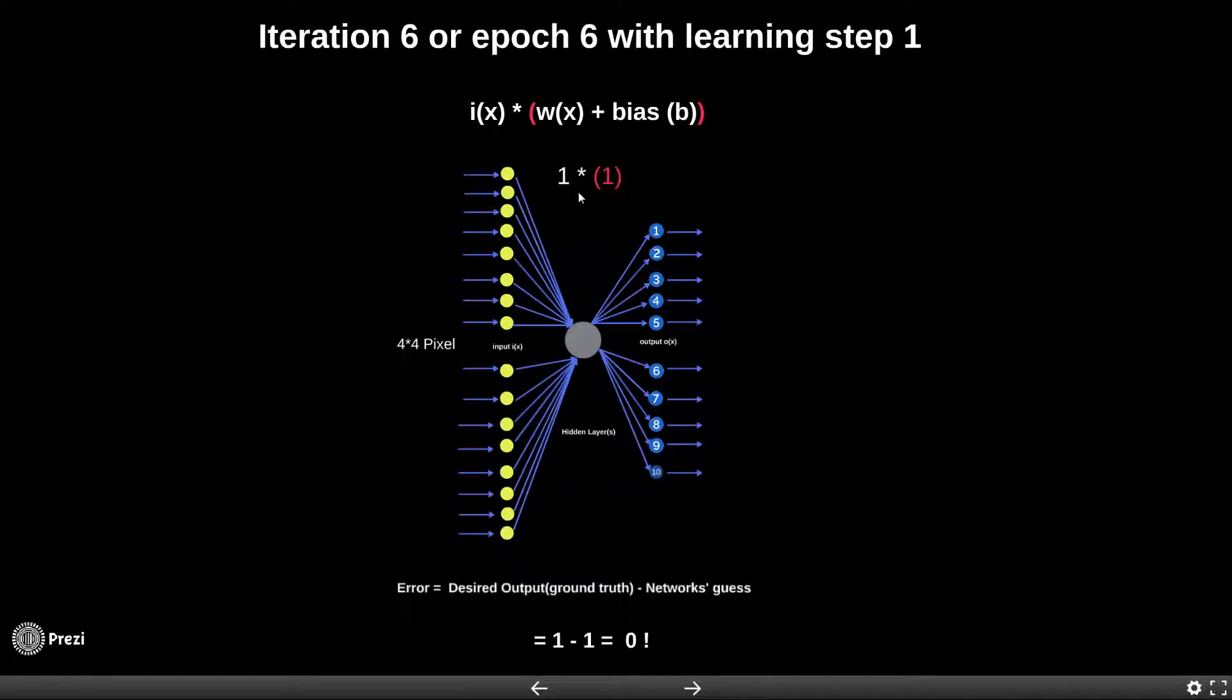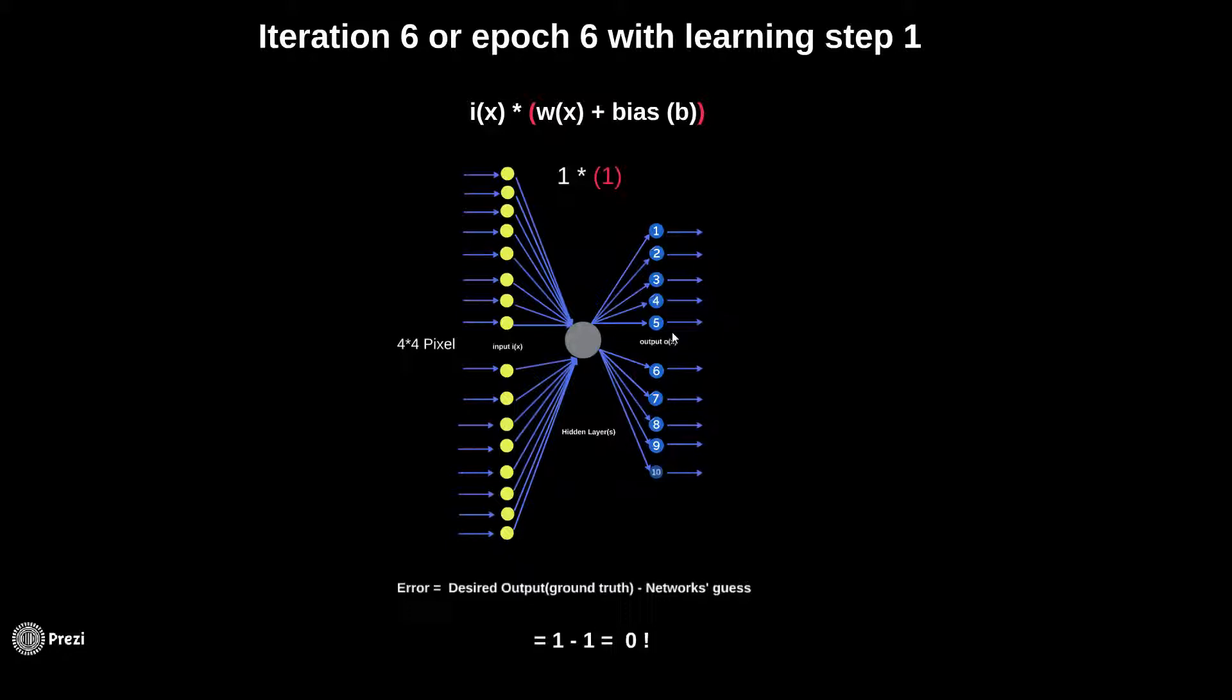Now with this trained model, the network can guess. Given a 1, it knows what biases it should apply so that the output is 1. In other words, the network's guess matches the desired output.